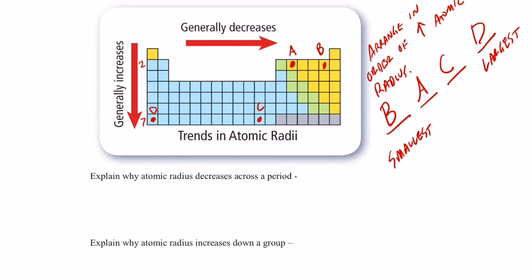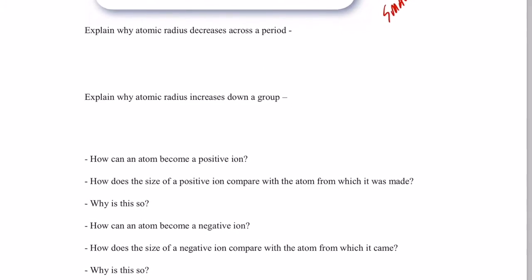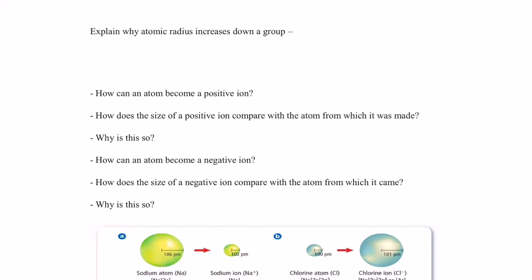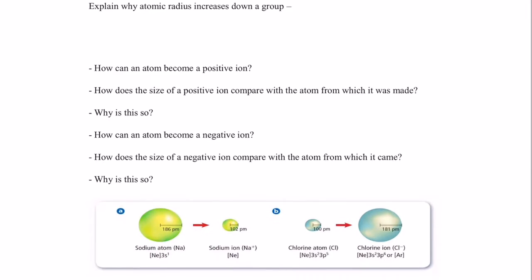You understand predicting atomic radius based on an element's position on the periodic table - that is a periodic property. Today we're going to talk about ions: we'll define positive ions and negative ions, how they're formed, and how we can predict their radius based on position on the periodic table.